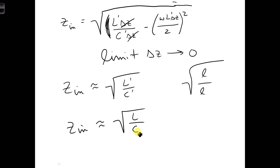This z in, z in input impedance, is an impedance that describes the transmission line. We'll call it the characteristic impedance of the transmission line. We'll call it z sub zero.